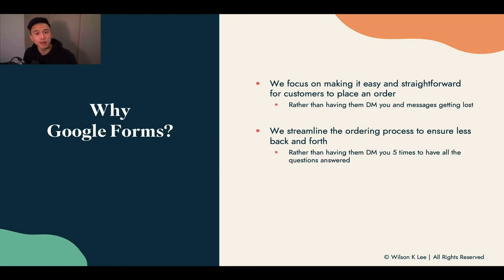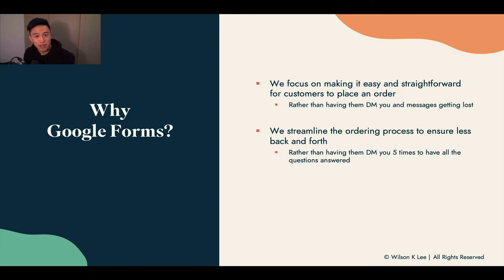You don't want to keep asking your customers where they live, what's their number, what flavor they're ordering, what is the quantity, or when is the delivery date. You want to have it all in Google Forms so it becomes super streamlined, allowing them to fill in all the information at once. Because if you go back and forth five different times, accounting for the times people are on their phones, that process can easily take hours just for them to place an order — and that is not a good customer experience.